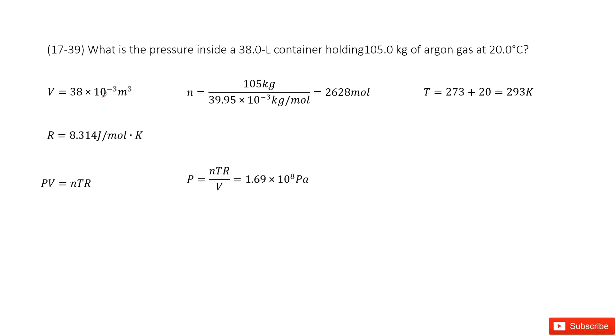We can see we have a container. The volume is given and there is argon gas inside. The mass of this gas is given as 105 kg. So in this way very easily we can find the mole number of this gas. Use the mass of the gas divided by the argon molecular weight. We check our textbook for argon, which is 39.95 times 10 to the negative 3 kg per mole. Then we get the answer there.